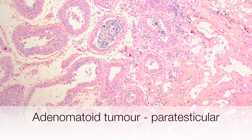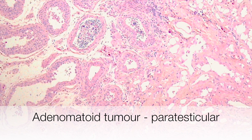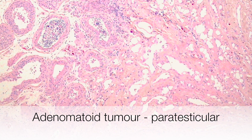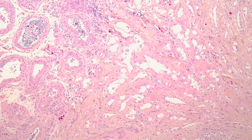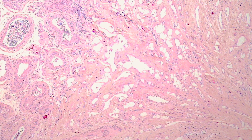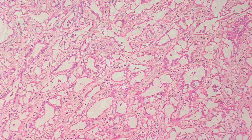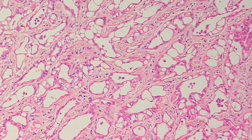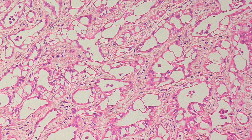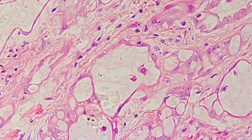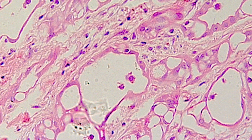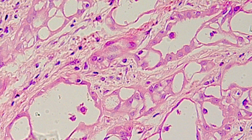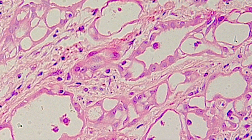This is a paratesticular adenomatoid tumour. On the left hand side you can see seminiferous tubules containing sperm. As we move to the right you can see the cleft-like spaces of the adenomatoid tumour. On a higher power the anastomosing pattern of the gland-like spaces becomes evident. At an even higher magnification, the adenomatoid tumour cells can be seen to be eosinophilic; some are flattened and some are cuboidal.